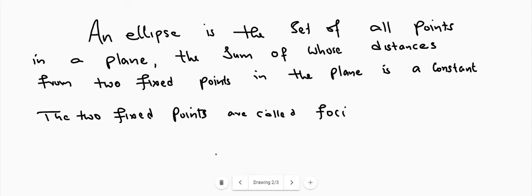An ellipse is the set of all points in a plane, the sum of whose distances from two fixed points in the plane is a constant. The two fixed points are called foci — it is the plural of focus. If there are two fixed points, the sum of distances from those two fixed points is constant.